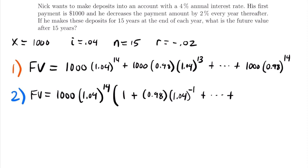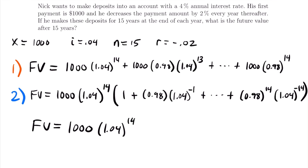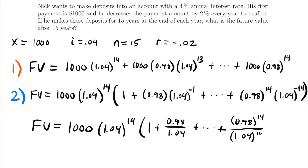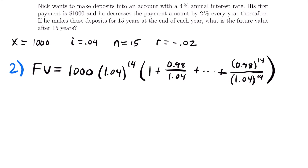The last term becomes 0.98 to the 14th times 1.04 to the negative 14th. Rewriting negative exponents as denominators, the future value equals 1,000 times 1.04 to the 14th power, times the quantity: 1 plus 0.98/1.04 plus, continuing all the way up to 0.98 to the 14th divided by 1.04 to the 14th. We can now move on to step three and rewrite this remaining factor as a geometric series.